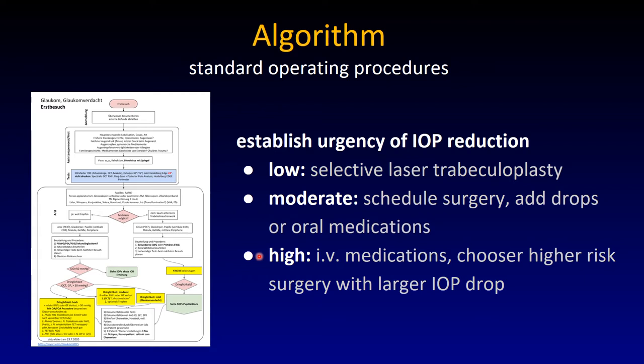If the pressure situation is very urgent — with a high pressure — one can use IV medications for an immediate and reliable onset. One would probably choose higher-risk interventions. Let's take a look at all of these.